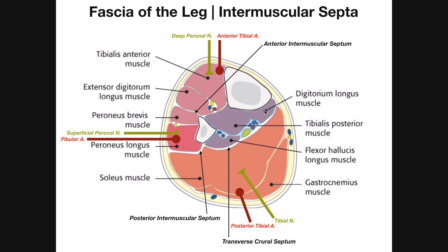This region right here in purple, where we see flexor digitorum longus, tibialis posterior, and flexor hallucis longus — these are going to be the deep muscles of the posterior compartment, and we'll be covering those in the next video. What we're going to be covering here are the superficial muscles — the most posterior ones. Those are going to be the gastrocnemius, the soleus, and another muscle not shown here called the plantaris. These two parts of the posterior compartment, the deep region and the superficial region, are separated by an extension of the deep fascia called the transverse quarrel septum.